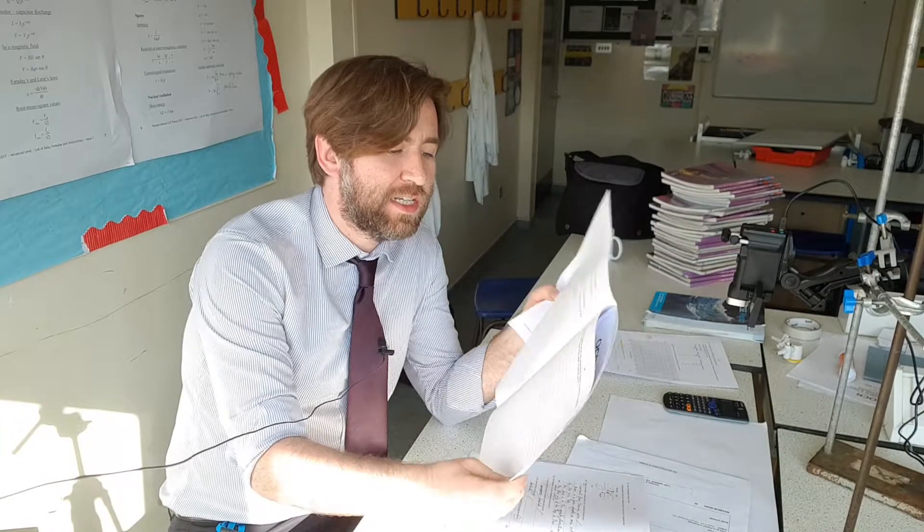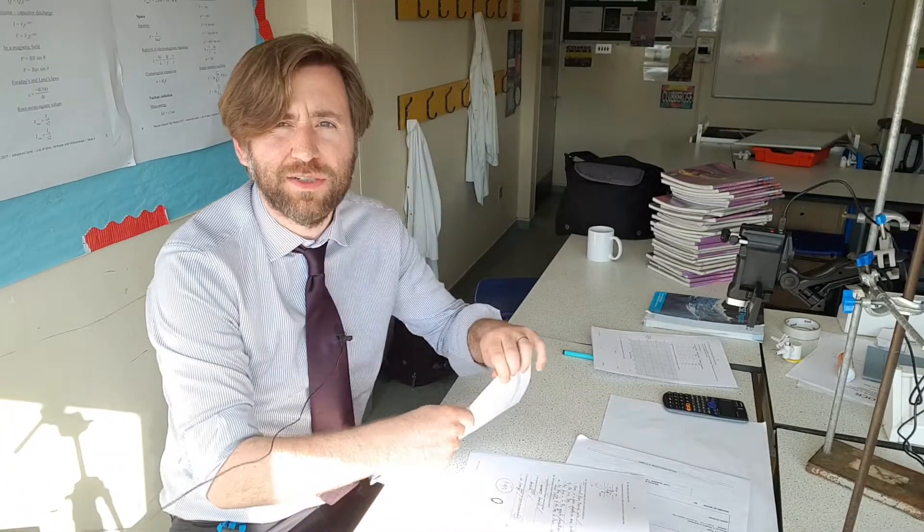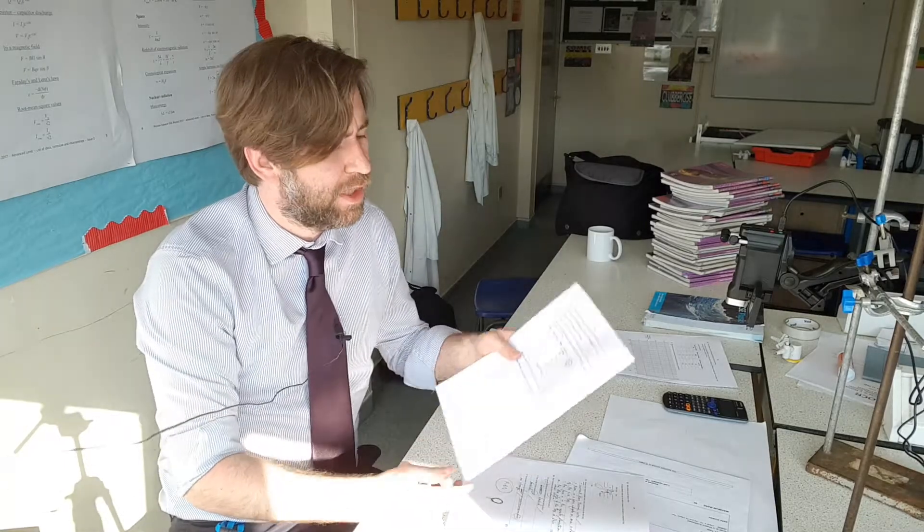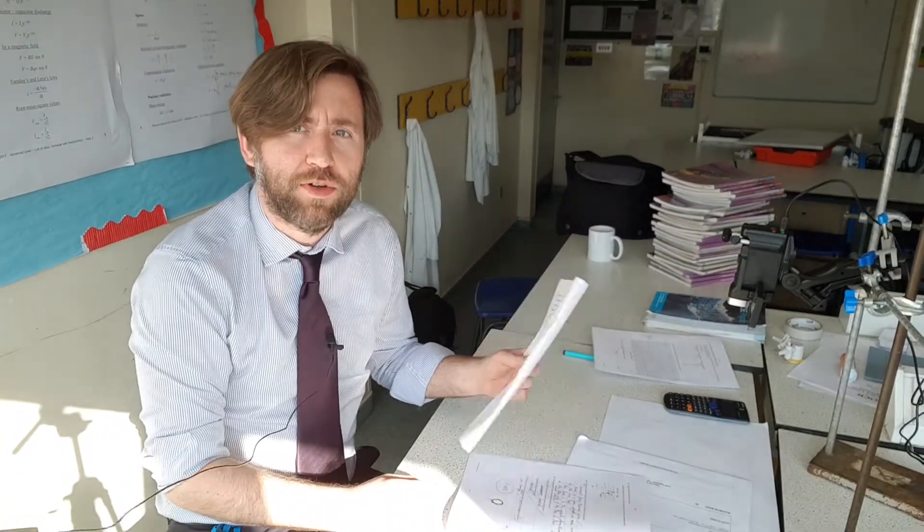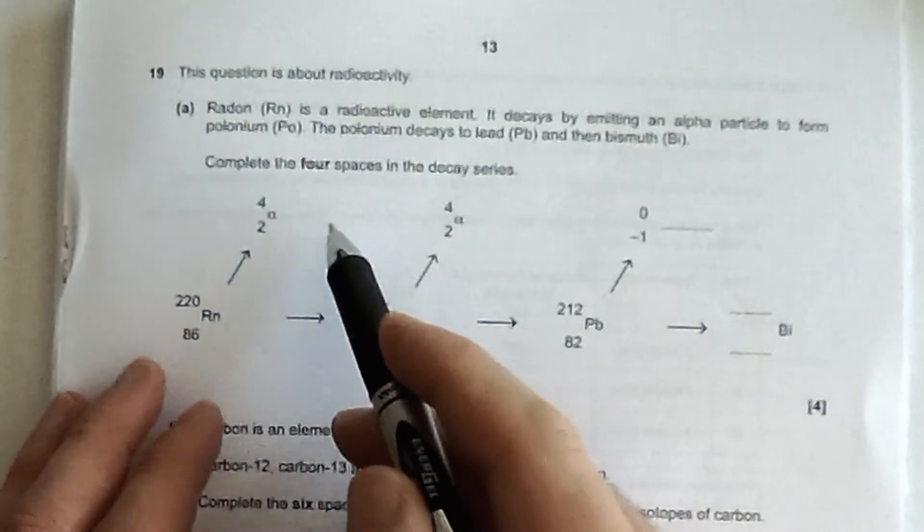But the second part is actually a six marker, a quality of written communication one. And it's quite a tricky calculation within that quality of written communication one about half-life. So make sure you go through this one thoroughly.